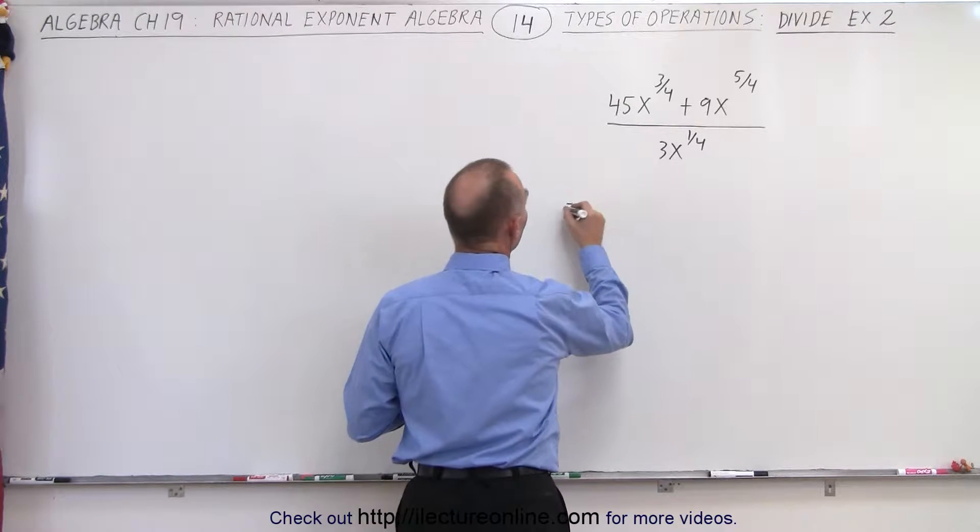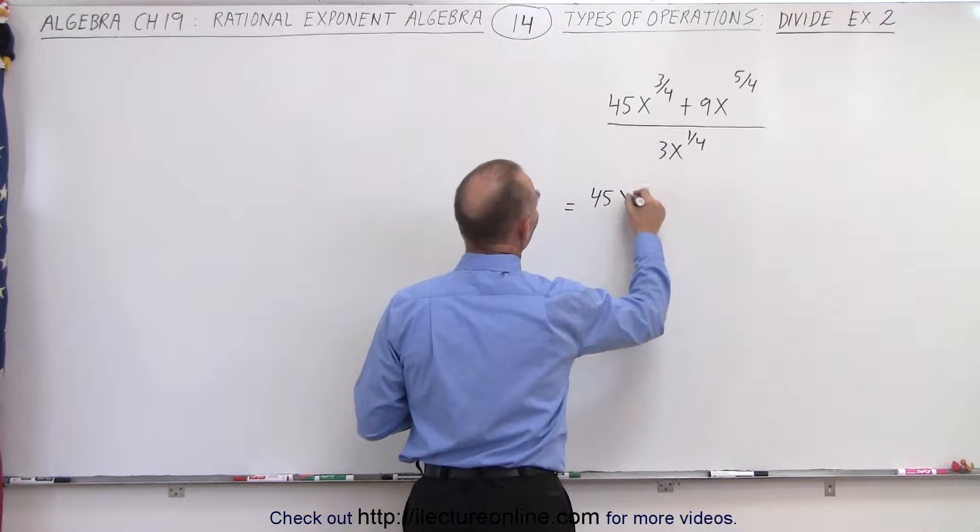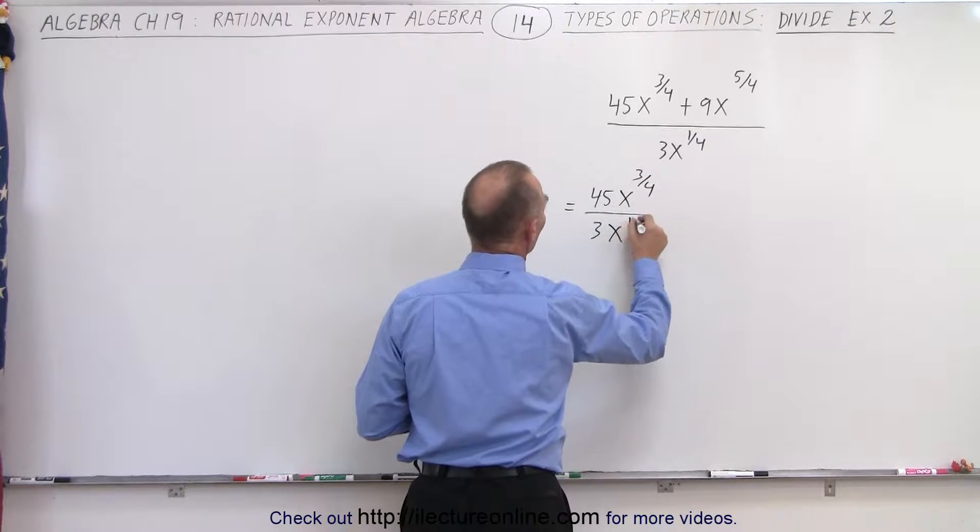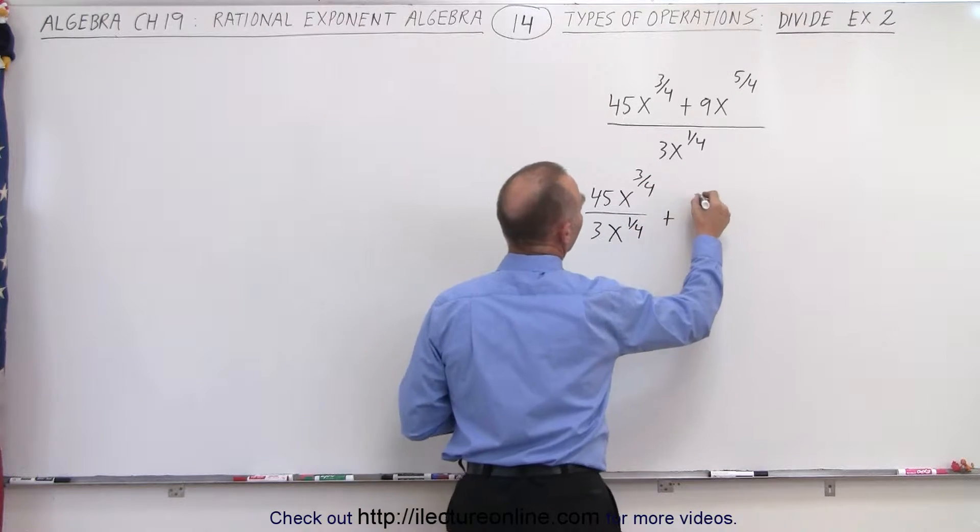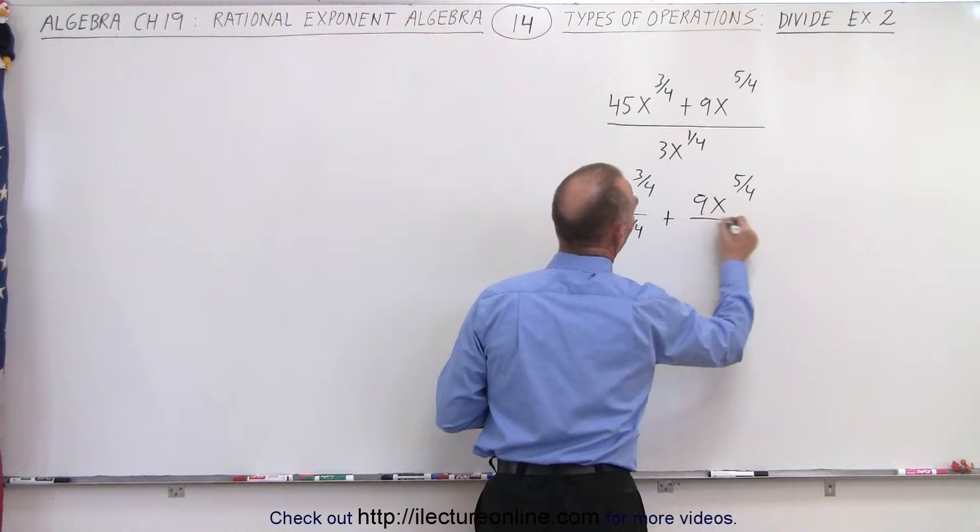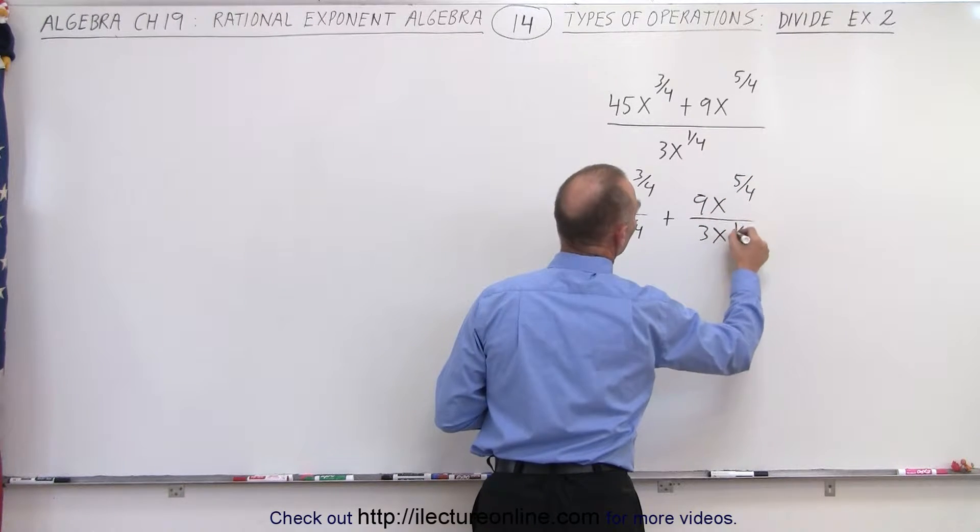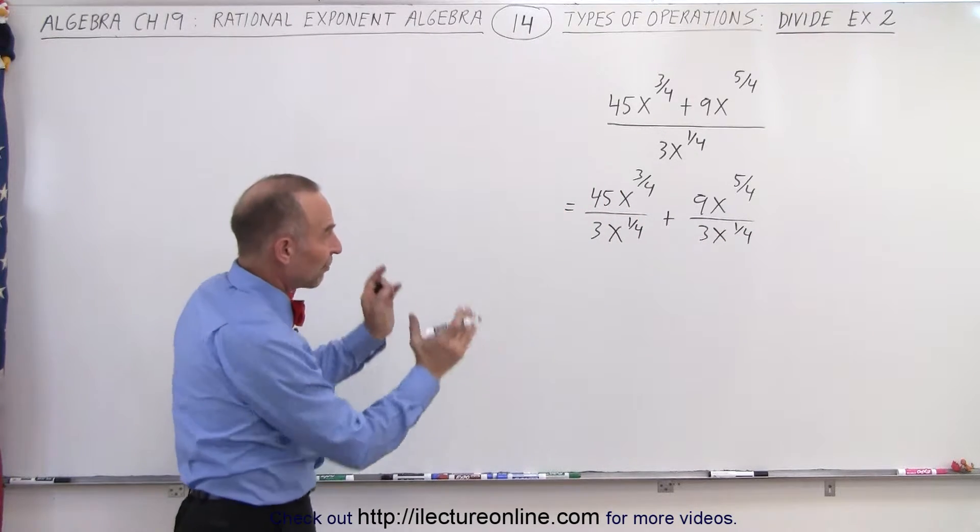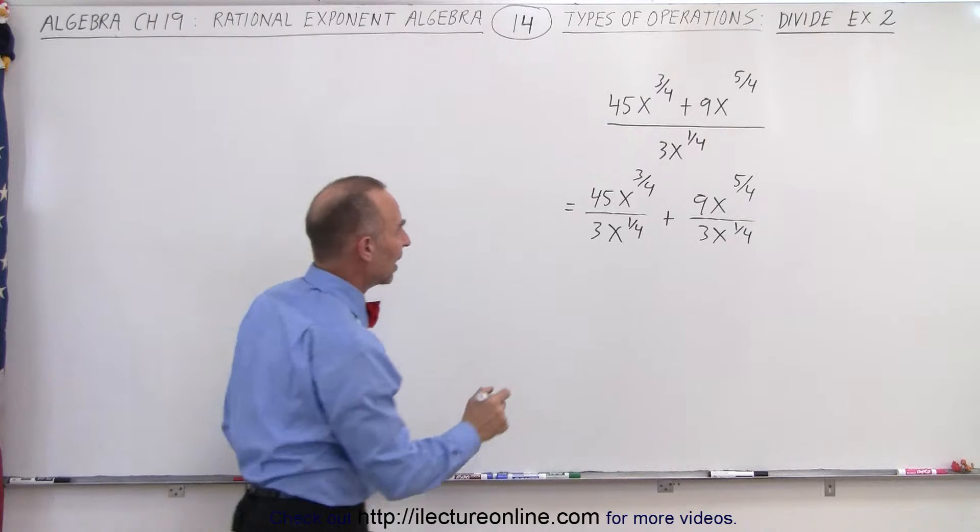So this can be written as 45x to the 3 quarters divided by 3x to the 1 quarter, plus 9x to the 5 quarters divided by 3x to the 1 quarter. It's the same thing but now written as two separate fractions so we can take one fraction at a time.